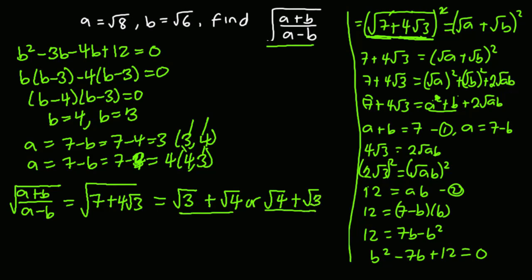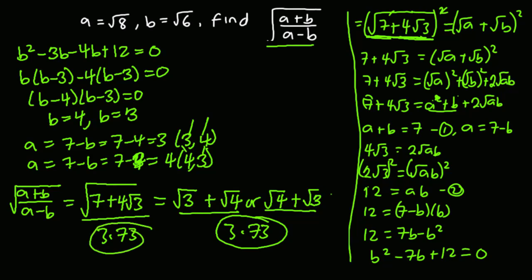Both expressions are the same. You can verify with a calculator: √(7 + 4√3) gives 3.73, and √3 + √4 also gives 3.73, confirming the answer is correct. Thank you for watching this video — I know it's been lengthy but it's all to give you a thorough understanding. If you haven't subscribed yet, I'll be glad if you do. See you in my next video, bye bye!